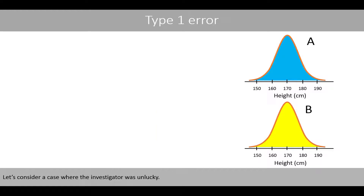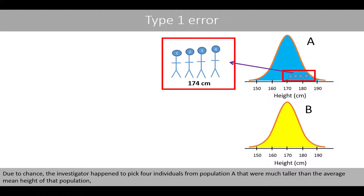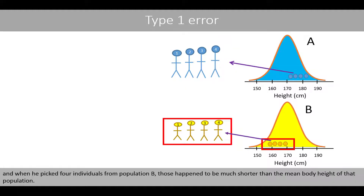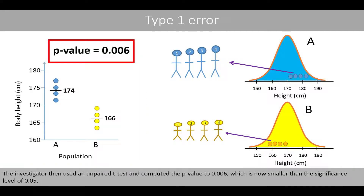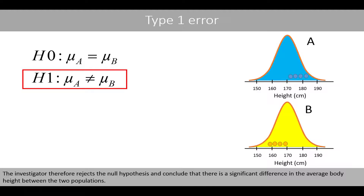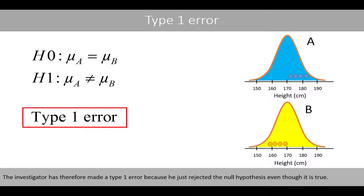Let's consider a case where the investigator was unlucky. Due to chance, the investigator happened to pick four individuals from population A that were much taller than the average mean height of that population, and when he picked four random individuals from population B, those happened to be much shorter than the mean body height of that population. He measured the height of the eight individuals and calculated the mean body height of the two samples. The investigator then used an unpaired t-test and computed the p-value to 0.006, which is smaller than the significance level of 0.05. The investigator therefore rejects the null hypothesis and concludes that there is a significant difference in the average body height between the two populations. The investigator has therefore made a type 1 error because he rejected the null hypothesis even though it is true.